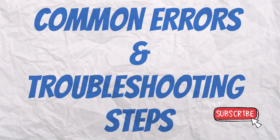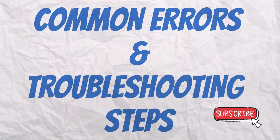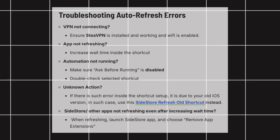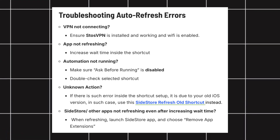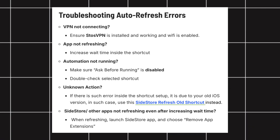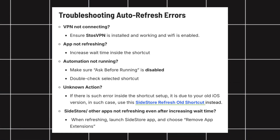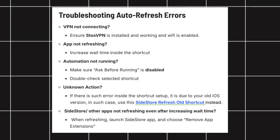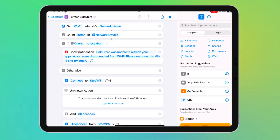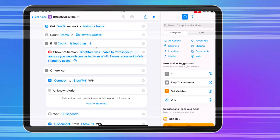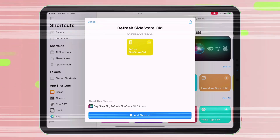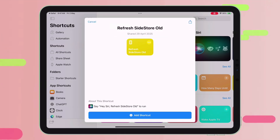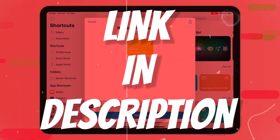Now let's cover the common errors and steps to troubleshoot the issue. These are the most common issues faced, and you can easily resolve them by following the troubleshooting steps. For instance, if you are facing the unknown action issue, all you need to do is download this shortcut present in my blog post — link will be in the description.